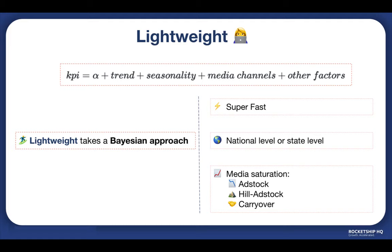With respect to media saturation, each media channel has a negative effect that tapers off slowly over time. Lightweight provides three options: first, Adstock, which applies an infinite lag decreasing in weight over time; second, Hill Adstock, which applies a sigmoid-like function for diminishing returns on top of Adstock; and third, Carryover, which applies a causal convolution giving more weight to near values than distant ones.